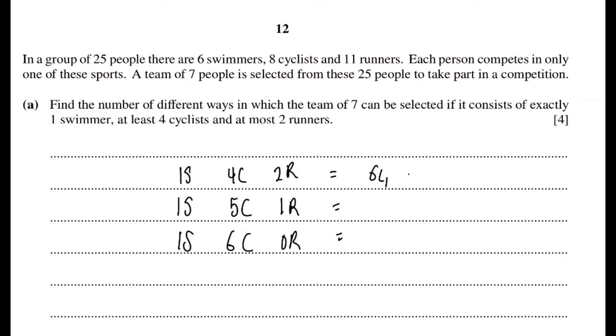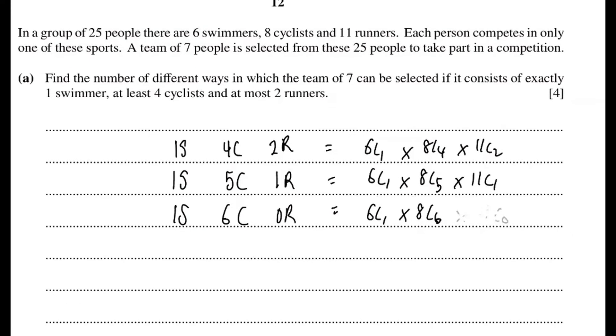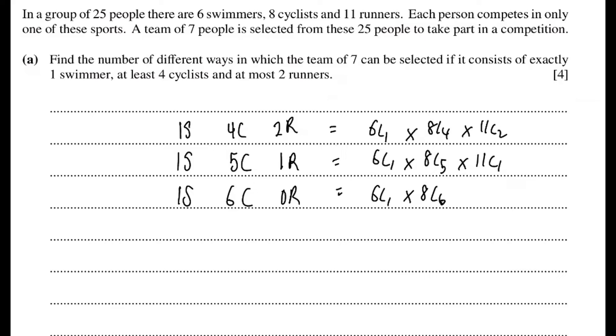So we will have 6C1, 8C4, 11C2, 6C1, 8C5, 11C1, and 6C1, 8C6, and then 11C0. And the 1 no need to write also, never mind, it's okay. Then we just add them together. The answers should be quite big because it's got a lot of numbers. My answer would be 26,964. 4 marks, not bad. Not that hard.